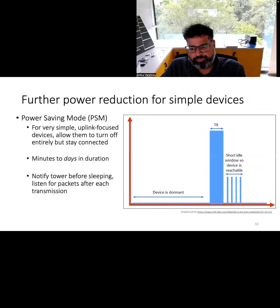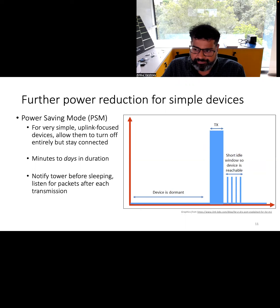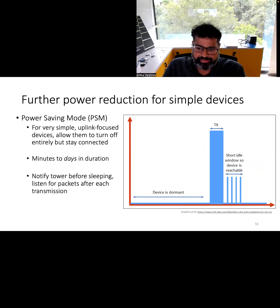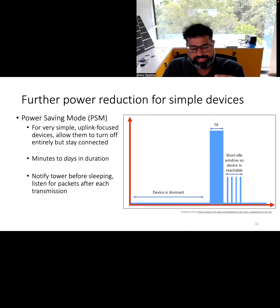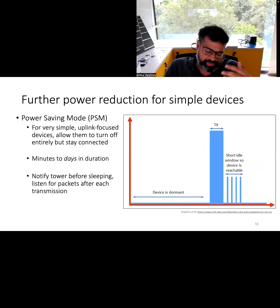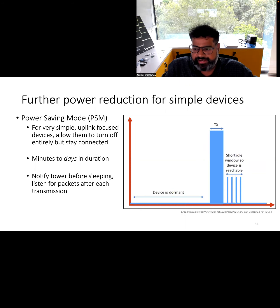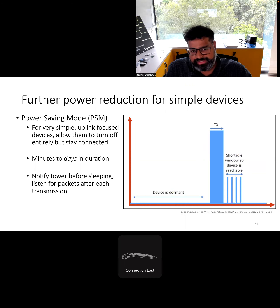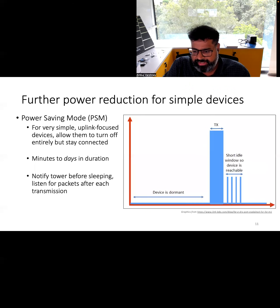There are also further power saving modes where devices can be totally turned off yet remain connected to the cellular base station, sleeping for anywhere from a few minutes to a few days. The device notifies the tower that it wants to sleep and then listens for packets during a short window after transmission occurs. All of this enables significant power savings, allowing these devices to last a long time on a battery while using cellular connectivity.